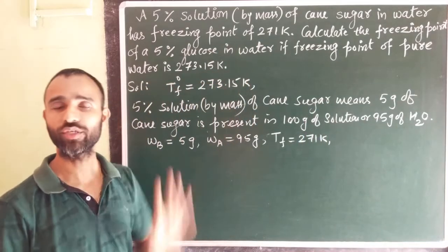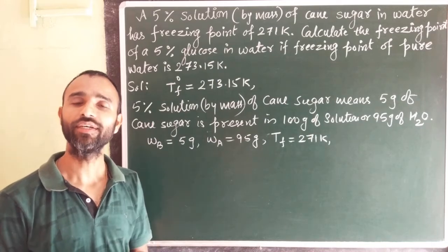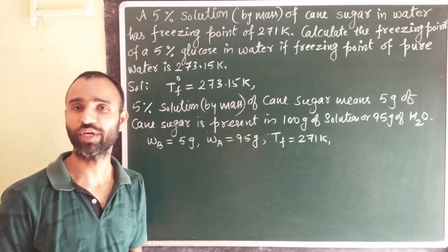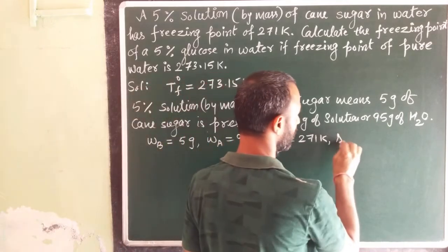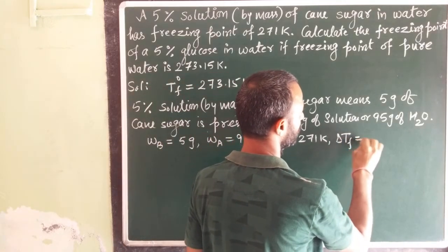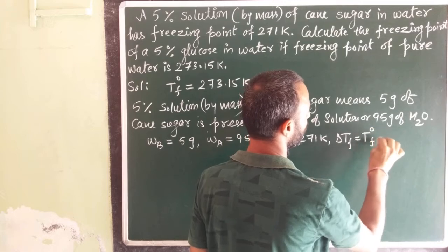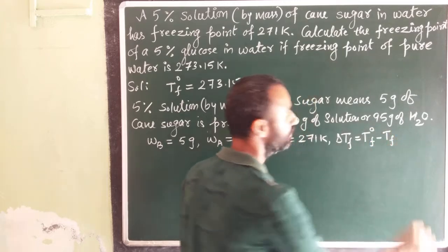Now when it is related to freezing point, we need depression in freezing point which is a colligative property. So delta Tf is equal to T0F minus Tf.